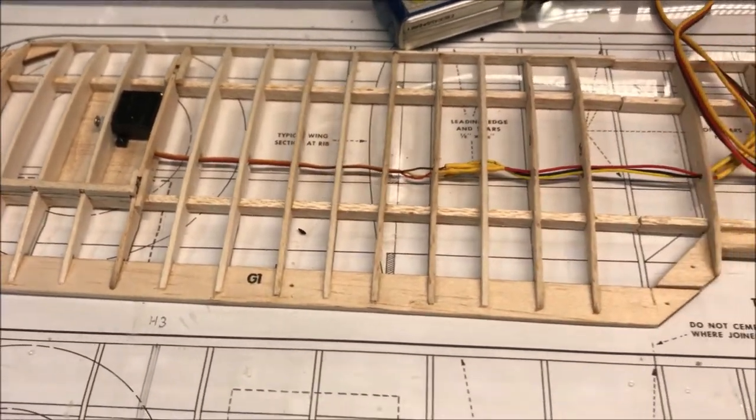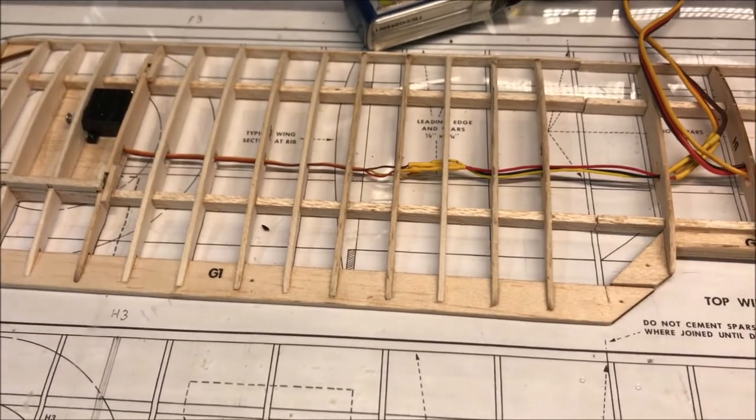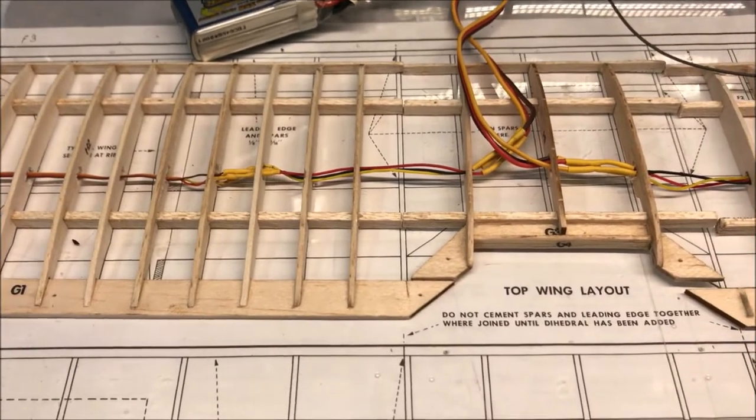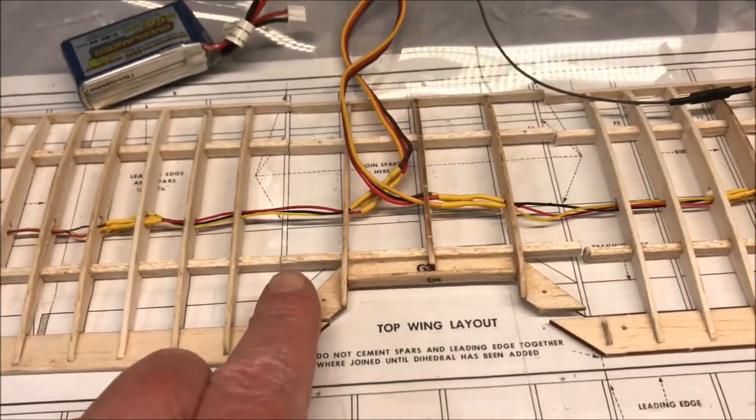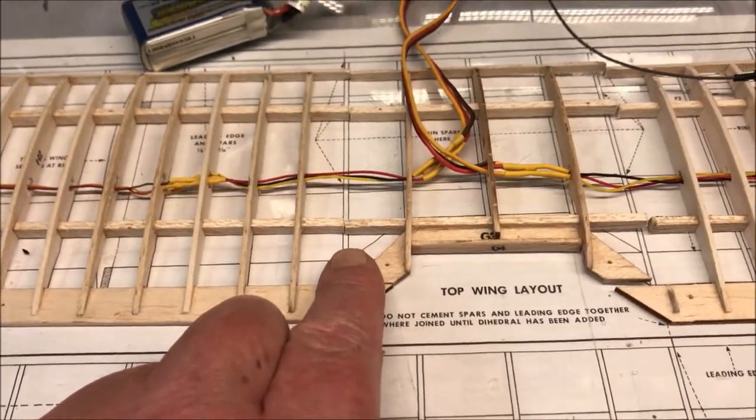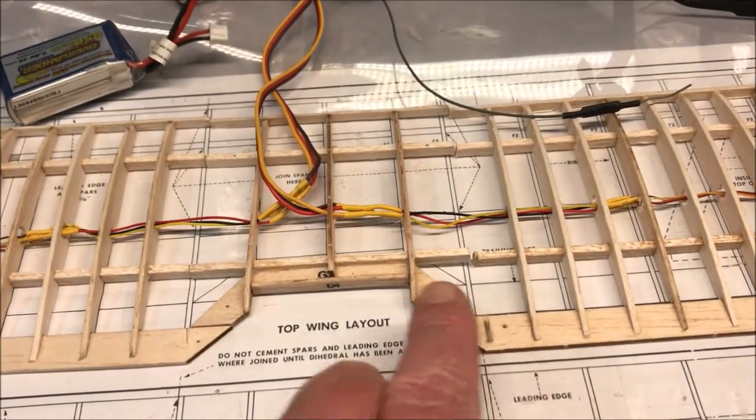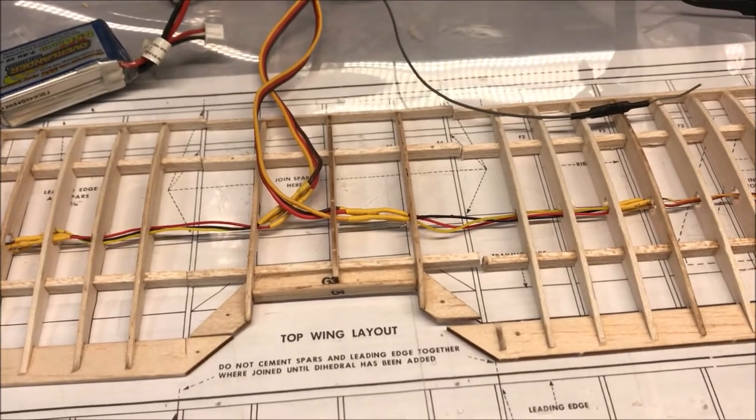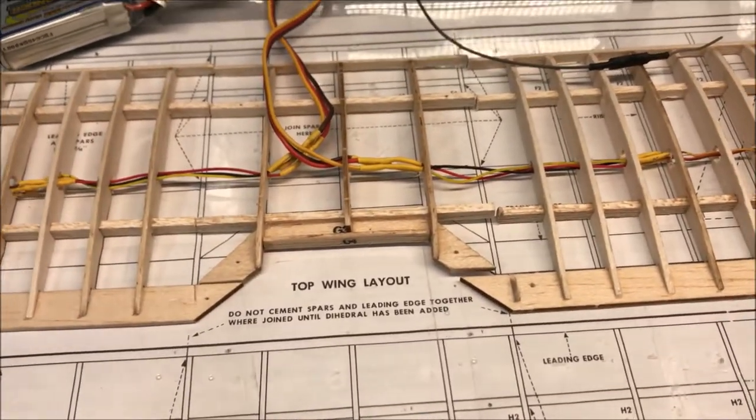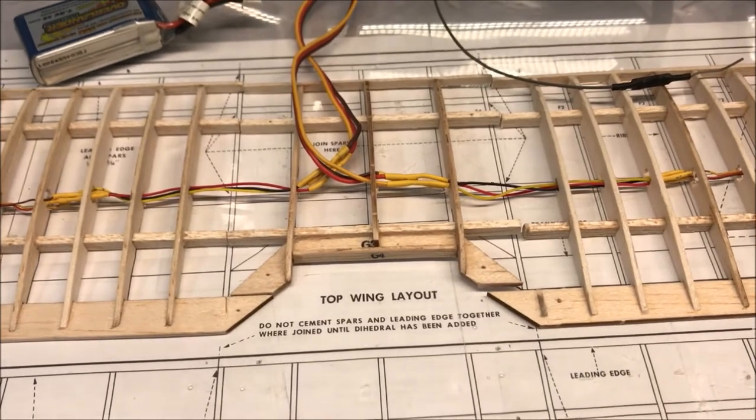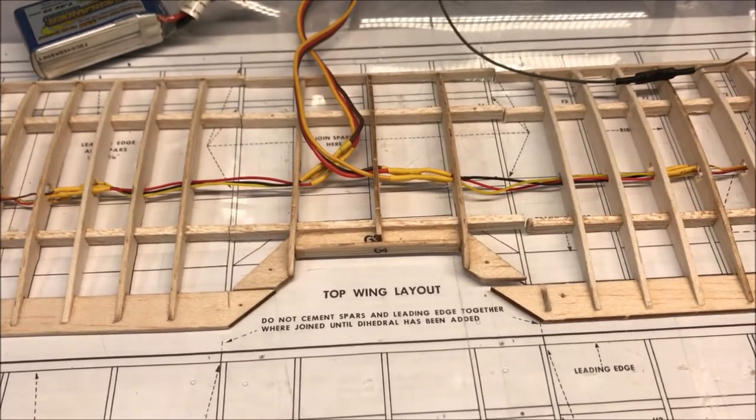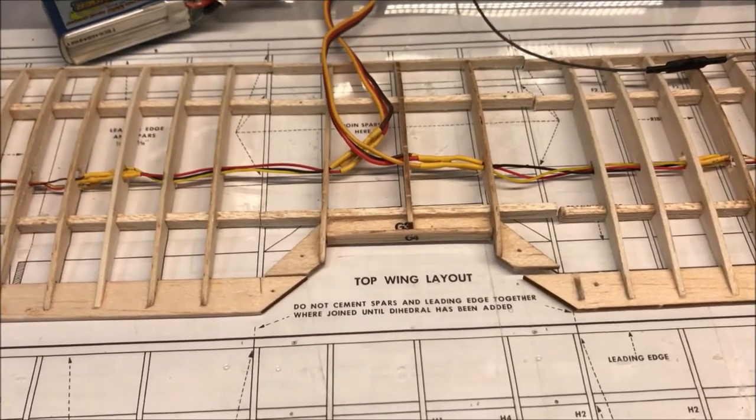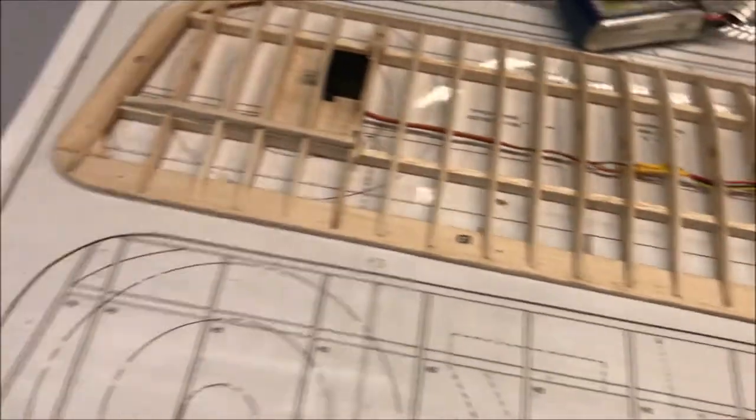That will now allow me to work on the servos themselves. Now I don't want to put the dihedral in just yet, so that means leaving out H2 here and here. It just gives me that little bit of flexibility. Although they are more or less coupled together because of the wiring, I just feel if I didn't do it I'd paint myself into a corner.